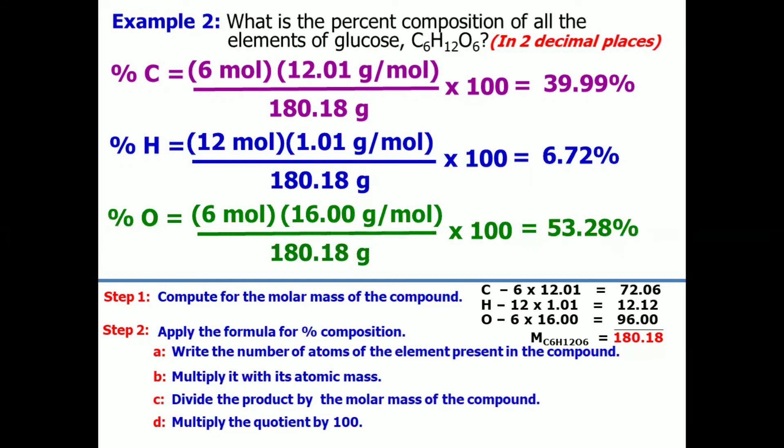This time, let's add all these percentages to check our answers. And the result is 99.99%. Oh, sir, it is not equal to 100. Does it mean that my answer is wrong? This is still acceptable. Because it is due to the rounding off that we applied.